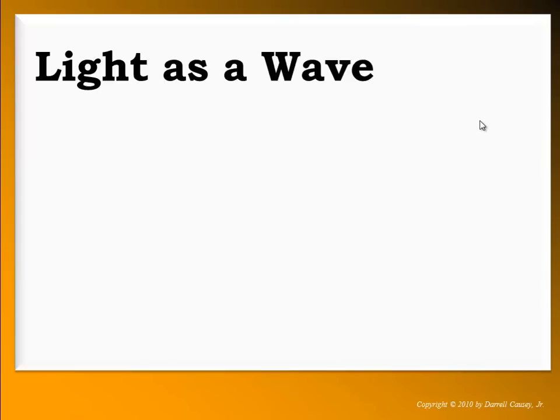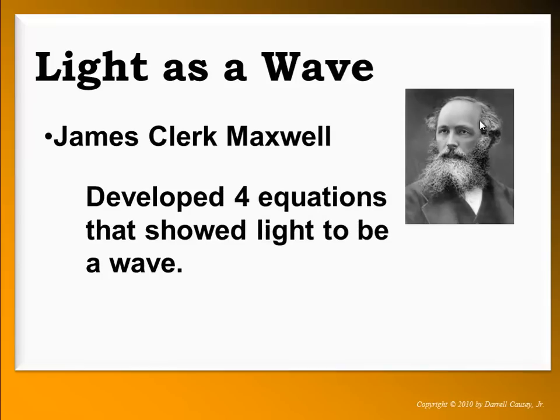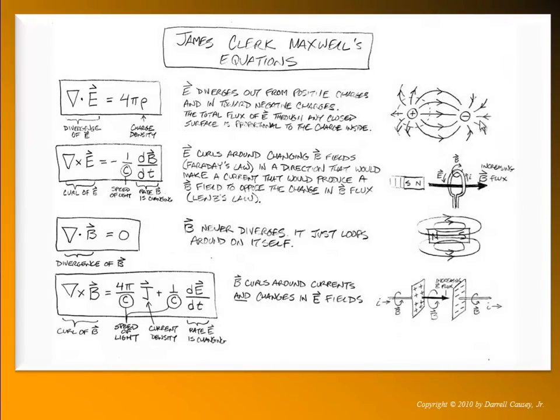Let's look at light as a wave. James Clerk Maxwell came later and he developed four equations that showed light to be a wave. This showed that Huygens was correct, light must be a wave, because mathematically we can show that light is a wave. Here's a look at his four equations. Most of you probably would not understand the work behind this, but there's his equations. I thought I would include them just to give you something to look at and be impressed by James Clerk Maxwell.